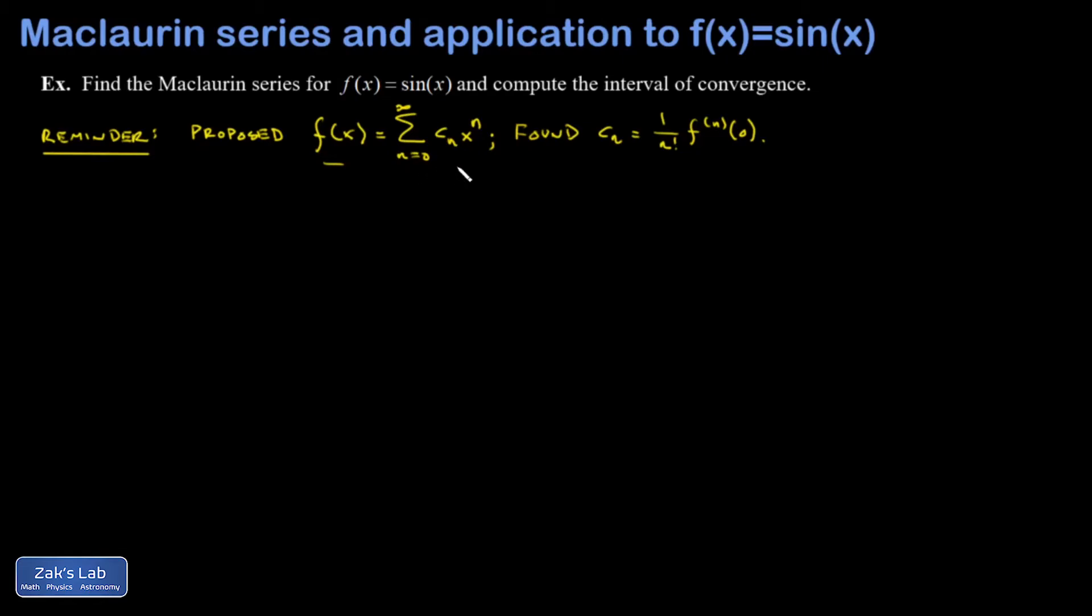So this thing that's in summation notation here, the first term is constant, the second is linear, the third is quadratic, and so on. And we found a general solution for those coefficients of x to the n, which is 1 over n factorial, nth derivative of the function evaluated at 0.